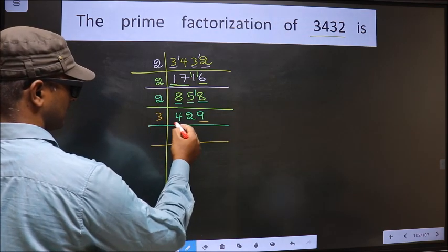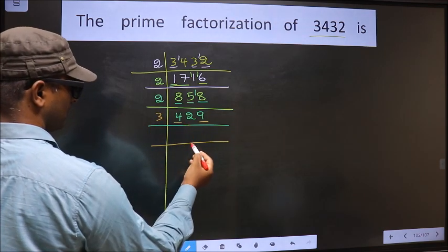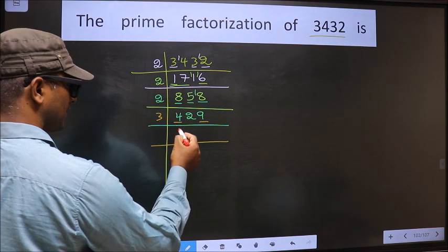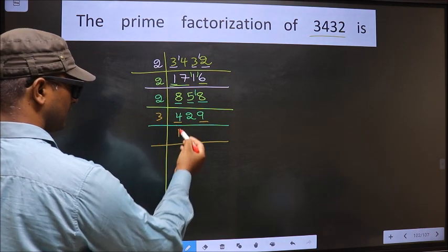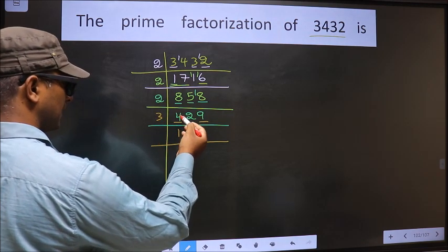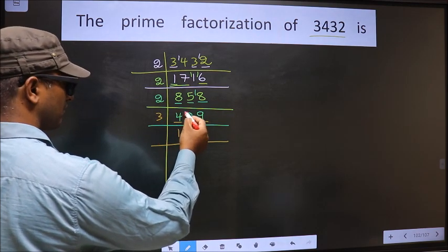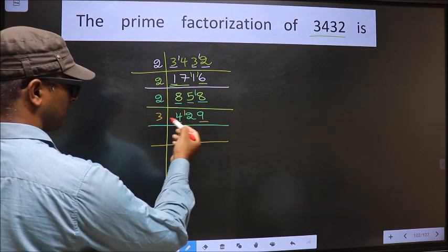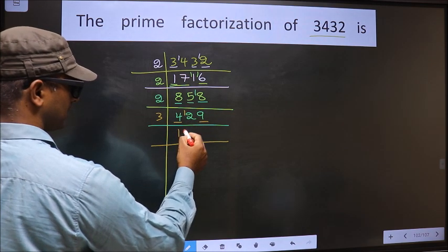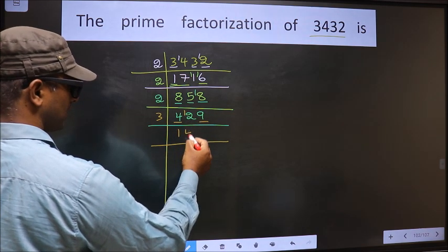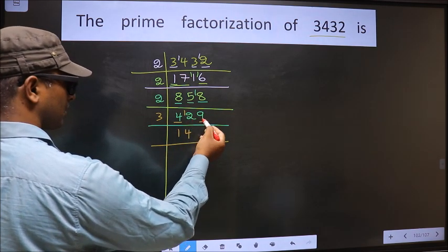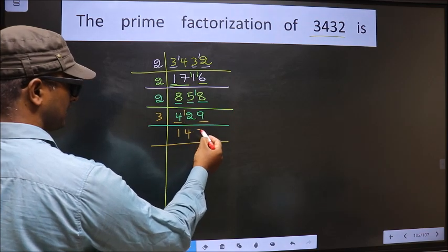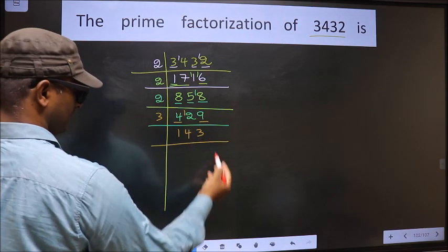The first number is 4. A number close to 4 in the 3 table is 3 ones, 3. 4 minus 3 is 1, carried forward making it 12. When do we get 12 in the 3 table? 3 fours, 12. Next number 9. When do we get 9 in the 3 table? 3 threes is 9.